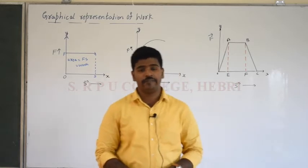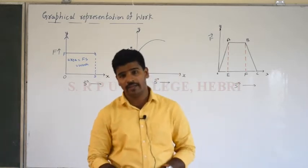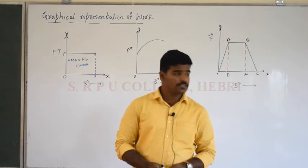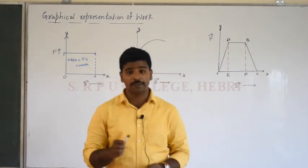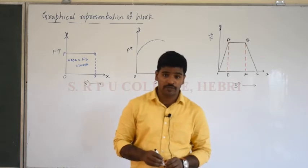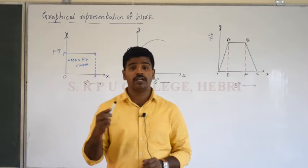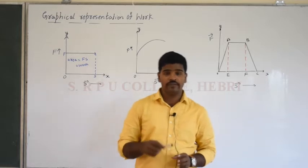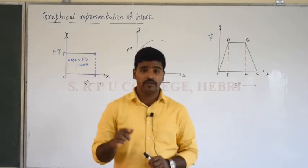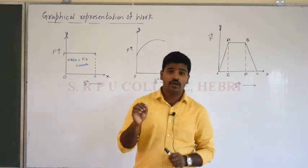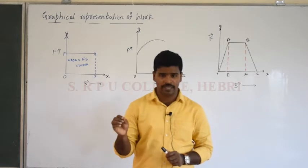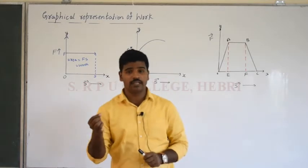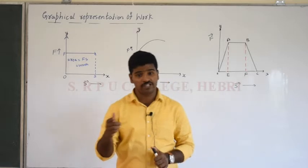Hello friends. In the last session we started the new chapter: Work, Energy and Power. We covered the basic concept of work — work is the product of force and displacement, expressed as W = F cosθ × S, where F cosθ represents the force component along the displacement direction. We also covered when work done is maximum (θ = 0°, force and displacement in same direction), when it is negative (force and displacement in opposite directions), and the unit and dimensional formula.